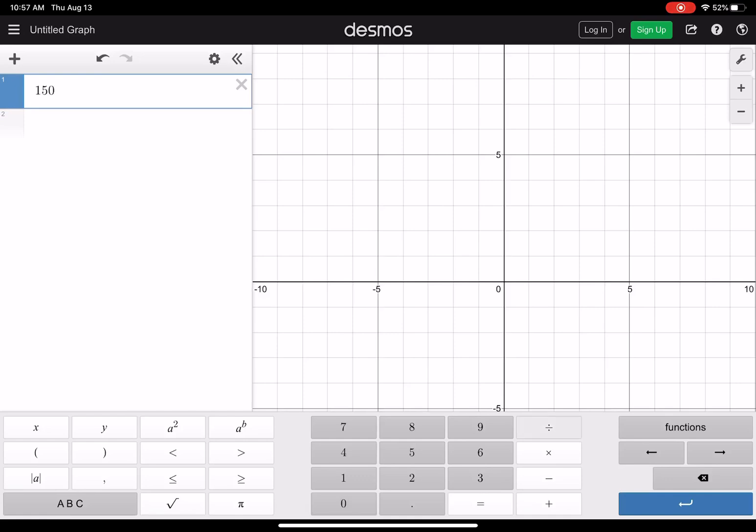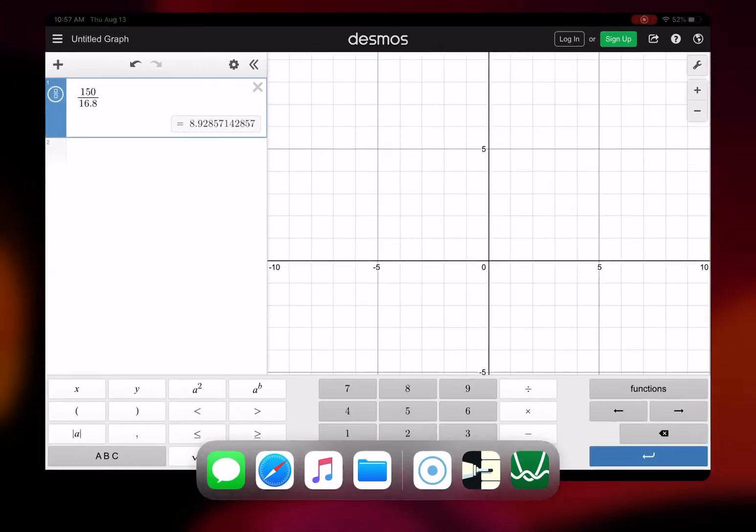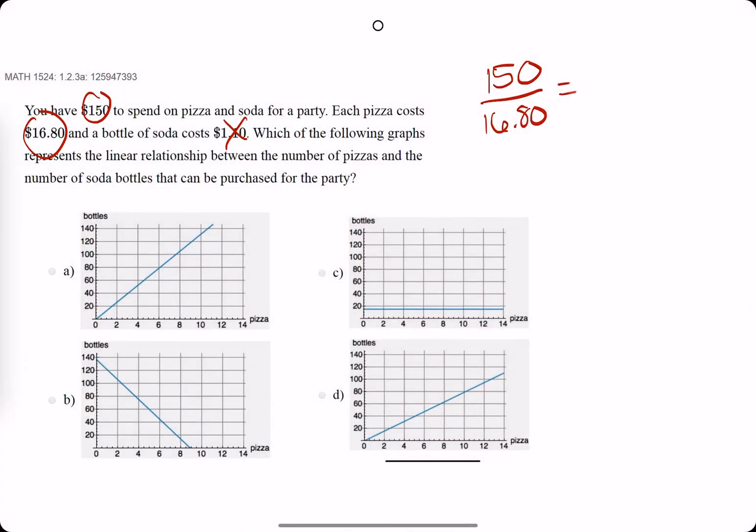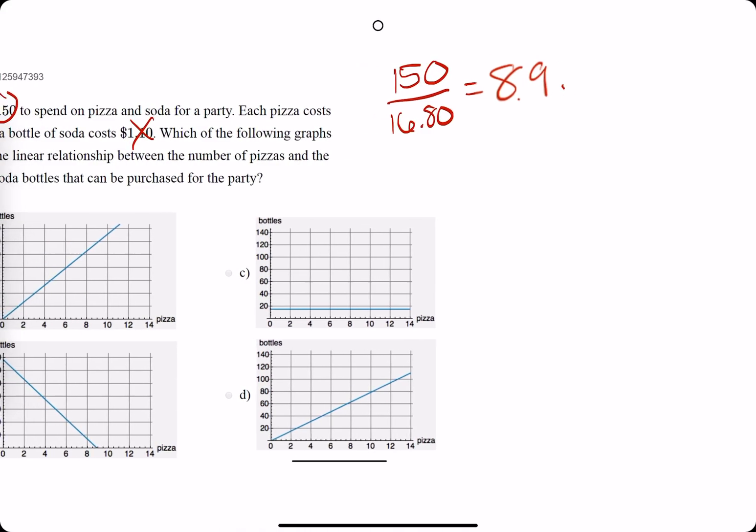$150 over $16.80 and we get about 8.9. I'll just say 8.9. So go back and say about 8.9. Again, this is the number of pizzas we can buy if we weren't buying soda. That's pretty good.